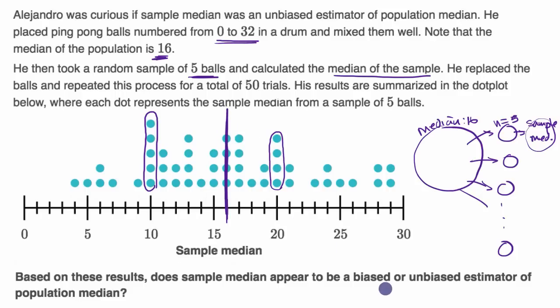So if we were dealing with a biased estimator for the population parameter, then as we get our approximation of the sampling distribution, we would expect it to be somewhat skewed. So for example, if the sampling, if this approximation of the sampling distribution looks something like that, then we'd say, okay, that looks like a biased estimator.